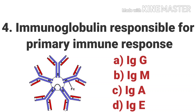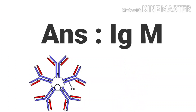The fourth question is: which immunoglobulin is responsible for the primary immune response? Options are IgG, IgM, IgA, and IgE. The answer is IgM. There are two types of immune response in the body: primary and secondary. The primary response occurs when a B cell sees an antigen for the first time. IgM is the antibody produced during the primary immune response and plays a significant role in fighting infection.